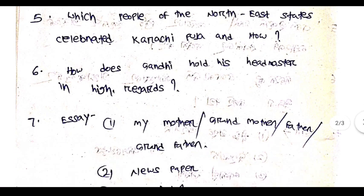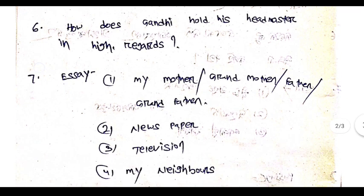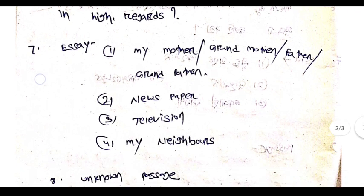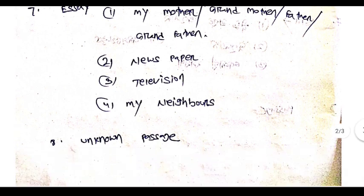Which people of the North East state celebrated Karachi Puja and how? How does Gandhi hold his headmaster in high regard? Then essay — topics include: my mother, grandmother, father, grandfather, newspaper, television, my neighbor. So, these are the essay topics.